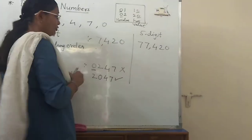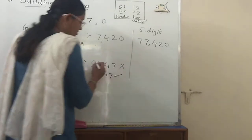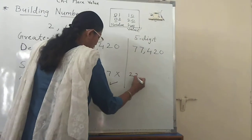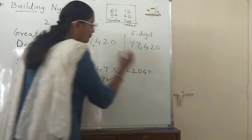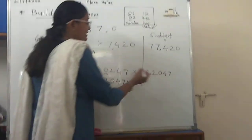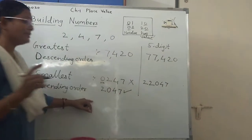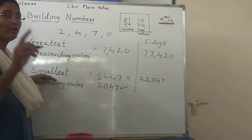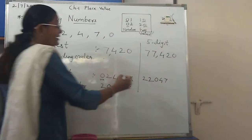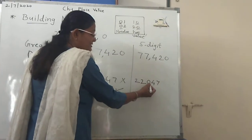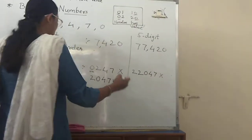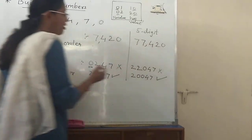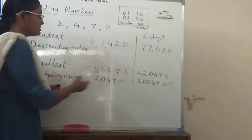For the smallest 5-digit number using digits 0, 2, 4, 7, you cannot write 0 first. The smallest digit is 0, so we repeat 0 twice, but place them after 2. So: 2, 0, 0, 4, 7 — giving 20047. This is the correct way of building a 5-digit number by using 4 digits that include 0.